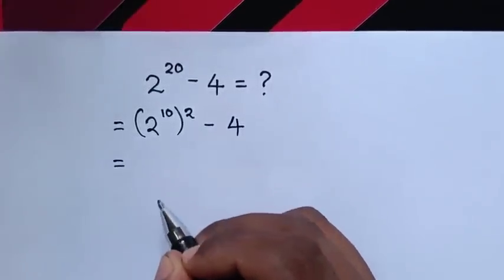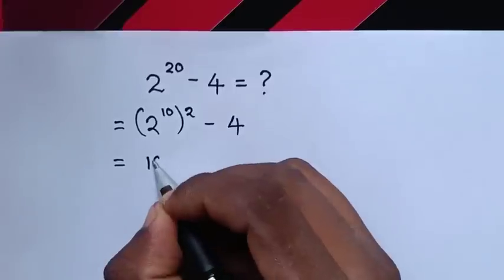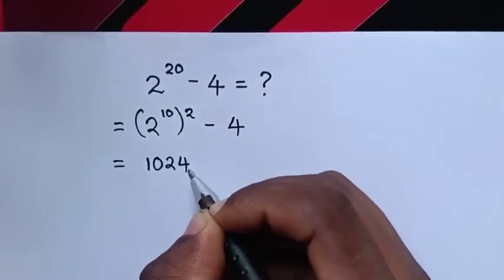This will equal 2 power of 10, which is the same as 1024, then squared, minus 4.